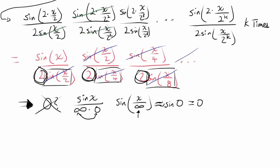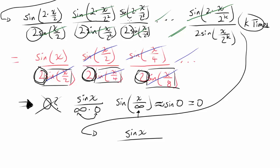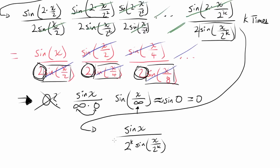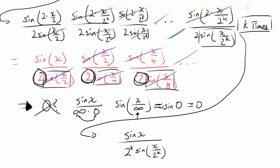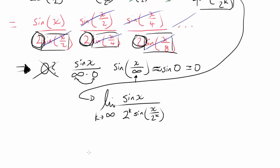So with finite k, things cancel diagonally and we're left with sine x on top, 2^k on the bottom, and sine of x over 2^k remaining. That gives us sine x over 2^k times sine(x/2^k). Since we want infinitely many terms, we take the limit as k approaches infinity of this expression to find the value.